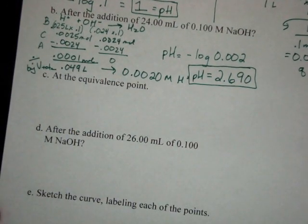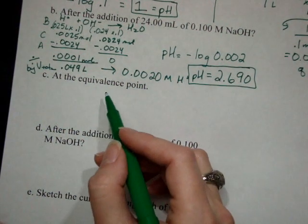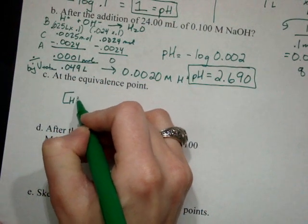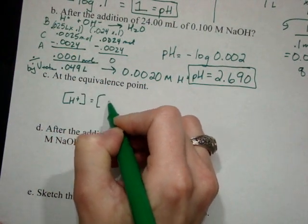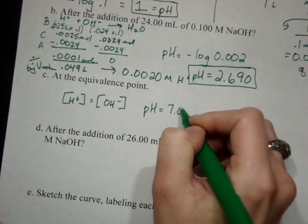At the equivalence point, strong acid, strong base, you have equal volumes of each. You have H plus equals OH minus. And by definition, that tells you that the pH is 7.